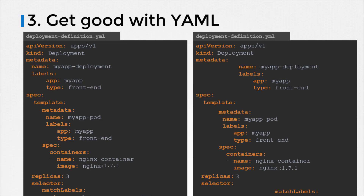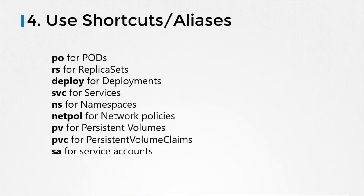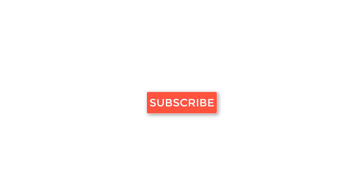Finally, remember to use alias names or shortcuts such as: po for pods, rs for replica sets, deploy for deployments, svc for services, ns for namespaces, netpol for network policies, pv for persistent volumes, pvc for persistent volume claims, sa for service accounts, etc. These are not major time savers but can help you save a few seconds here and there, accumulating to a few additional minutes towards the end.